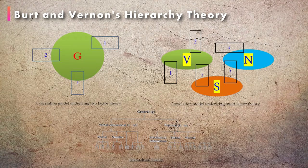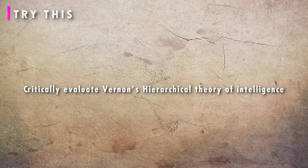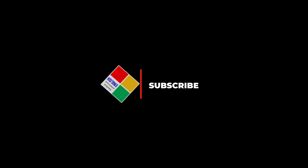Vernon's theory is a compromise formula between Spearman's two-factor theory and Thurston's multi-factor theory. It retains the g-factor and relegates Thurston's and Guilford's structure of intellect to a subordinate level. According to Spearman's three-factor theory...